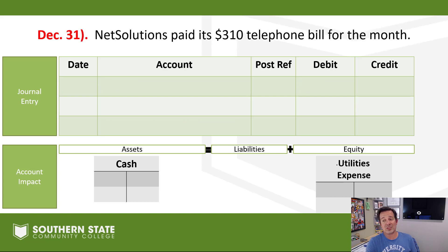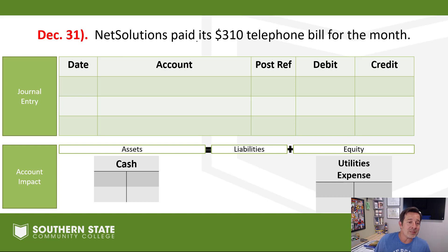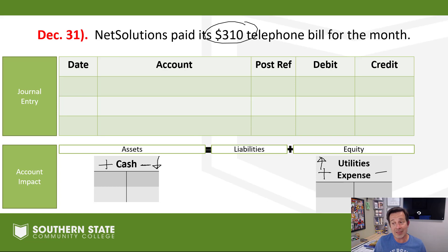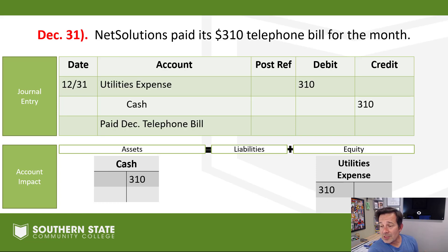We are at the end of the month with a few more transactions to record. NetSolutions paid $310 for a telephone bill for the month of December. Our cash account needs to come down and utilities expense is going to go up. Expenses go up on the debit side and assets go down on the credit side. The entry: utilities expense debit, cash credit — for the telephone bill.